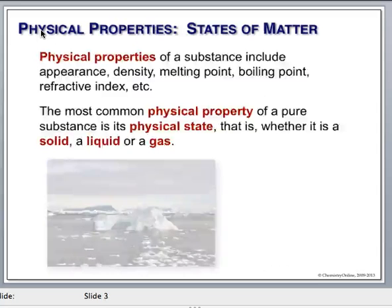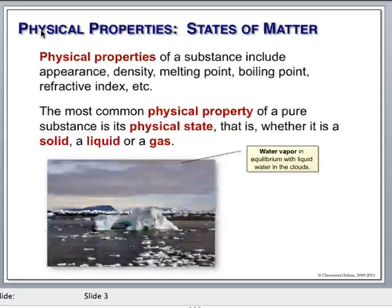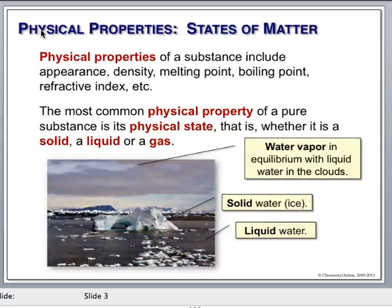Let's go way back — way back machine — to chapter one, where we are talking about physical states. When we talk about a physical state, it's a physical property: solid, liquid, or gas — icebergs, water, water vapor. Water is actually the only substance that naturally exists in all three states here on Earth.